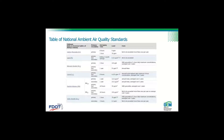Here's a table that lists all the criteria pollutants. It tells you whether they're primary or secondary standards, the averaging time, and the concentration level that can't be exceeded, and when it can't be exceeded. For example, for carbon monoxide, the one-hour averaging time standard should not be exceeded more than once per year.